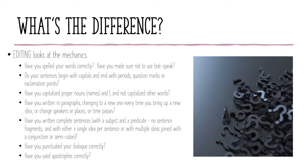You should also change paragraphs if you change speakers when writing dialogue, if your characters move to a different place, or if time passes — each of those should mark the beginning of a new paragraph. Have you written in complete sentences? You have a subject and a predicate, with no sentence fragments and no run-on sentences. If you've got multiple ideas, you're using a conjunction like 'and' or 'but', or a semicolon or a period to separate them. Have you punctuated your dialogue correctly? Have you used apostrophes correctly? So editing is the spelling, grammar, and punctuation piece. Revision is the actual content of what you're writing.